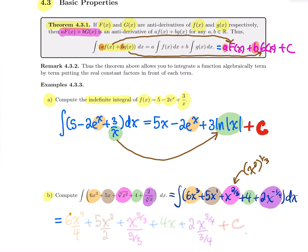6x^3 becomes 6x^4 over 4. The 5x^1 becomes 5x^2 over 2. The x^(2/3) becomes x^(5/3) divided by 5/3 — since 2/3 plus 1 equals 2/3 plus 3/3, which is 5/3. And then 4 becomes 4x.